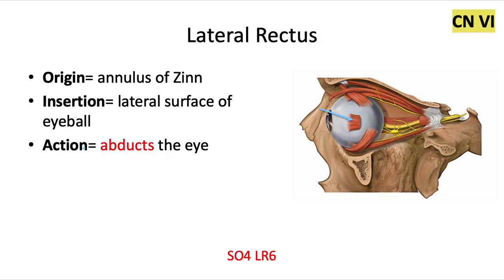The lateral rectus muscle originates from the annulus of Zinn — the common tendinous ring of the eye. It's a ring of fibrous tissue surrounding the optic nerve near the entrance at the apex of the orbit. It inserts into the lateral surface of the eyeball and it abducts the eye.